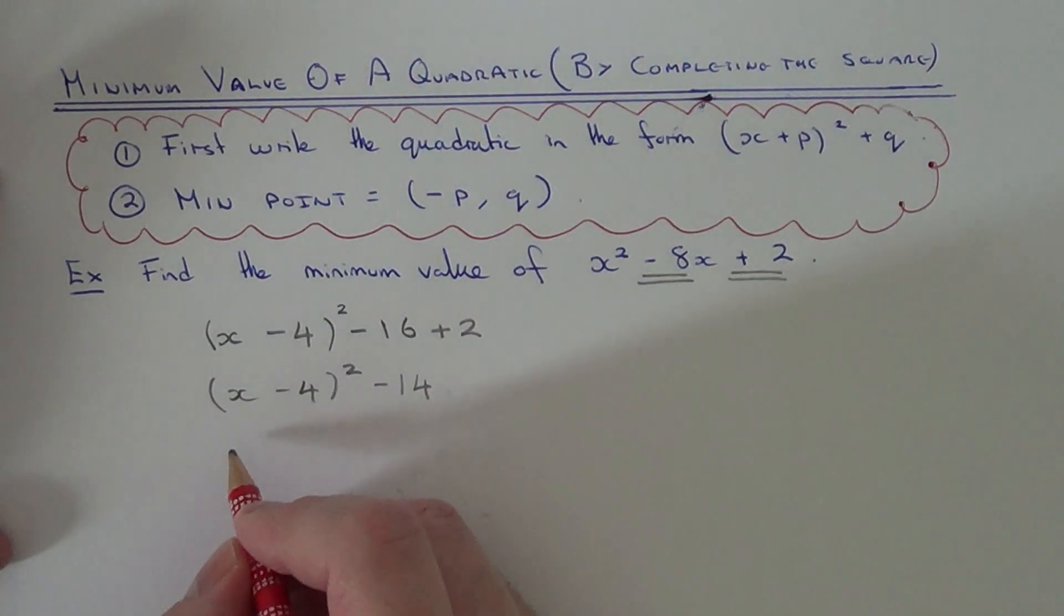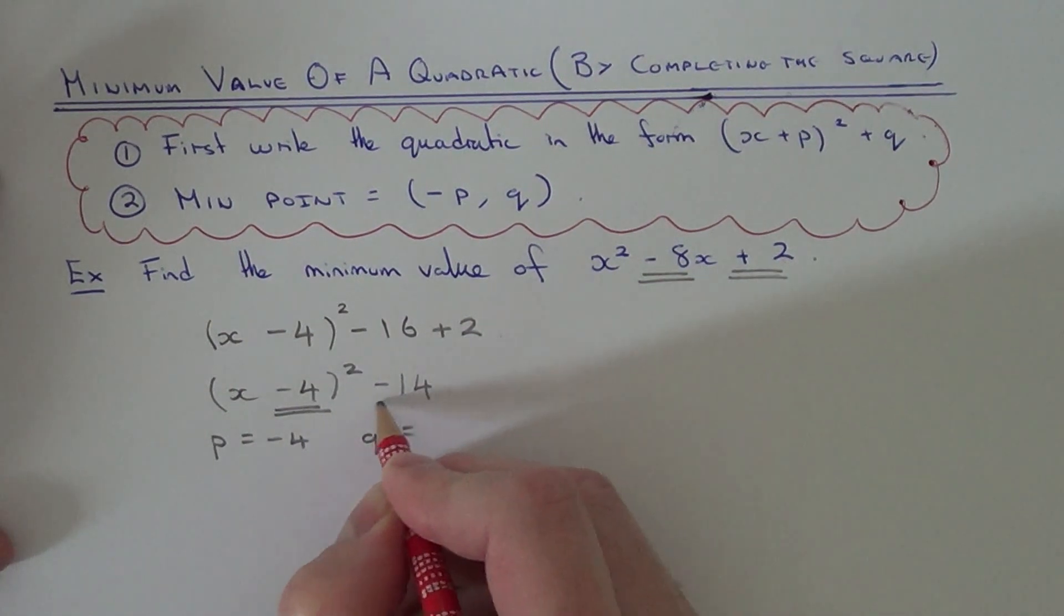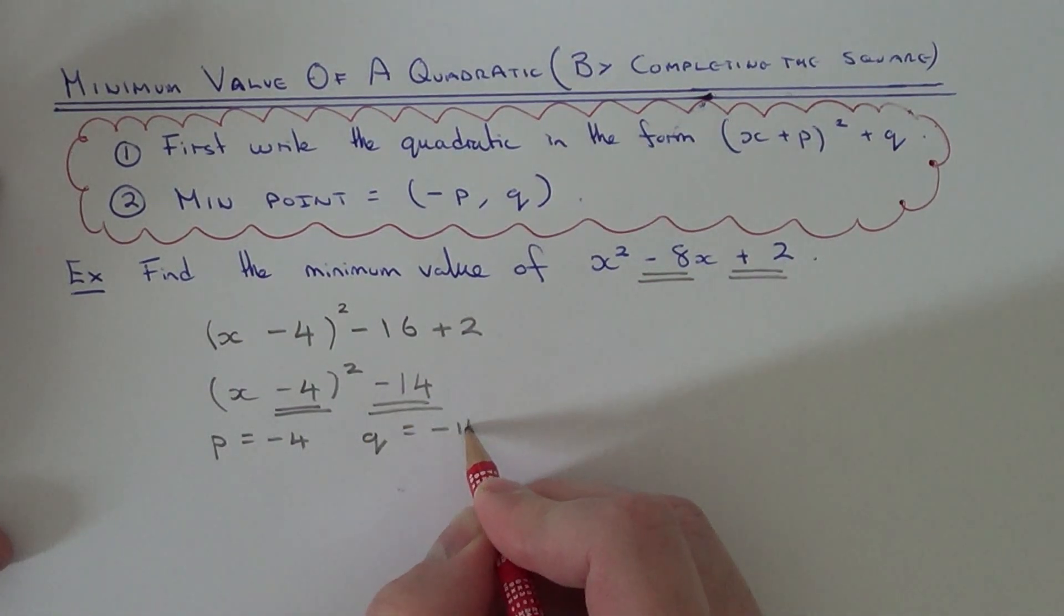So our values of p and q are p is this number here which is minus 4 and q is this number here which is minus 14.